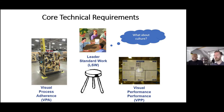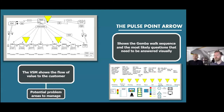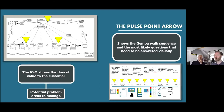In order for that to work, the leader needs to go to where the work is happening — get out there and observe and use these tools. To sum this up: the VSM shows the flow of value to the customer, helping understand potential problem areas — anywhere inventory accumulates and flow stops. Once we have that data, we can identify the management hot spots and build the pulse point arrow. The pulse point arrow shows the most likely questions that need to be answered visually and provides a logical gemba walk sequence based on how value flow is happening.